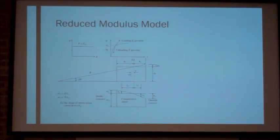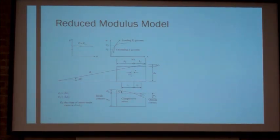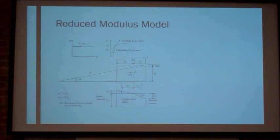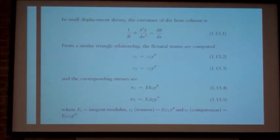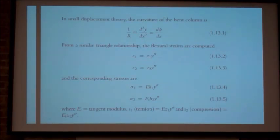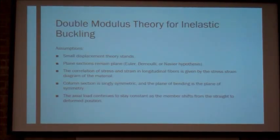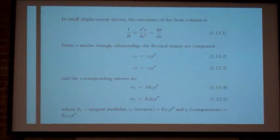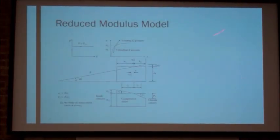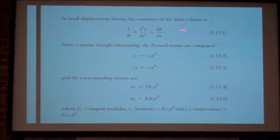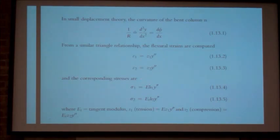This is the reduced modulus model, which shows how these derivations of equations give us P-delta, the diagram of the stress-strain, etc. Here is the deriving of the equations where we have the small displacement theory still standing as one of the assumptions, using similar triangles in this diagram to get our different strains and stresses.